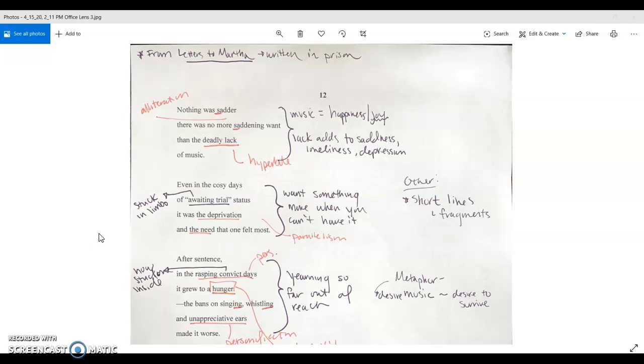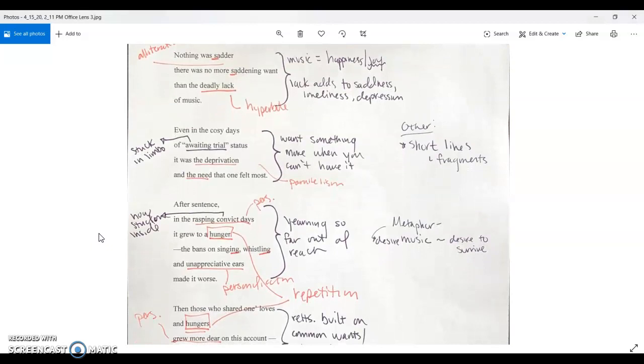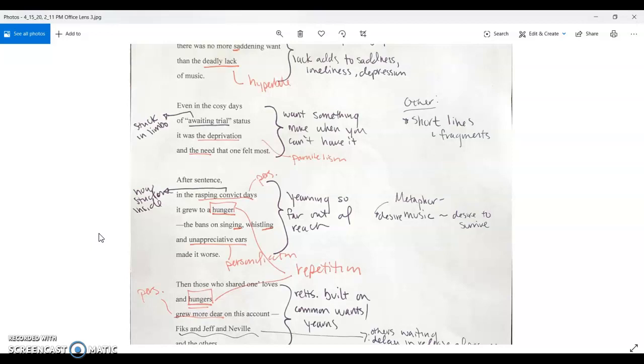The second stanza talks about wanting something you can't have. Awaiting trial status was when all of these prisoners were put in prison awaiting their sentencing. They were in such limbo and he couldn't feel anything but sadness.